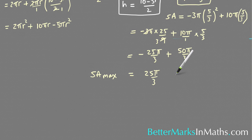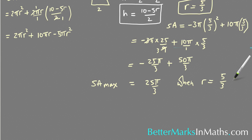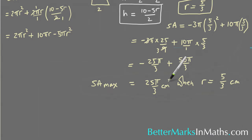So that's the surface area max and that happens when r equals 5/3. So this is 5/3 centimeters and because this is area that's going to be centimeters squared.